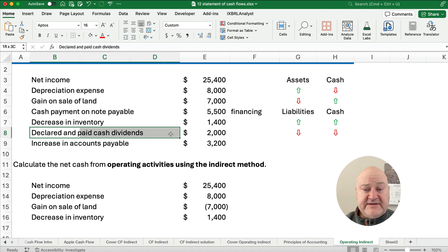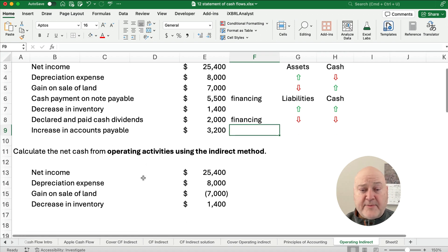Declared and paid cash dividends. Well, cash dividends is stockholders' equity, so that's also financing. So we ignore it for operating activities.